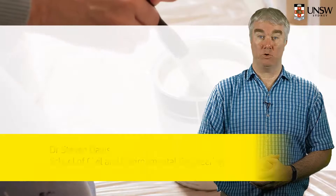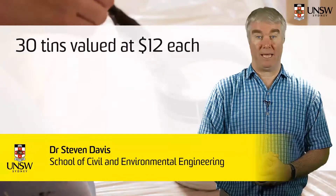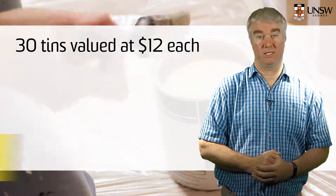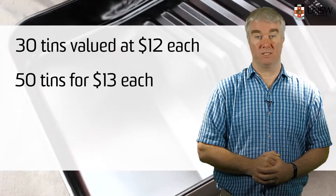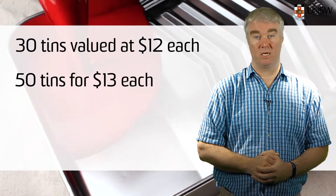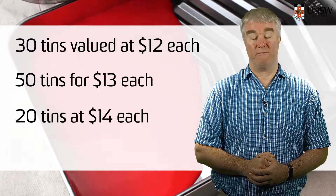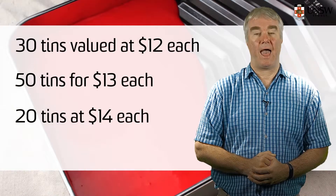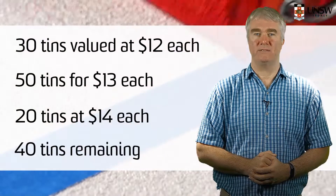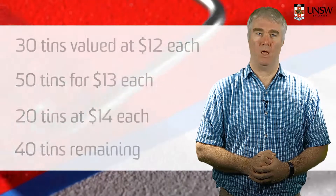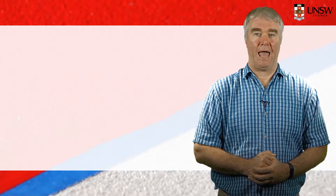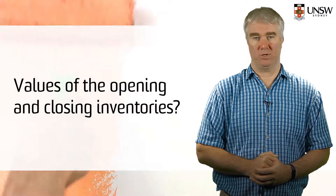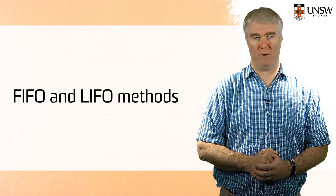A painter starts a fiscal period with 30 tins of paint valued at $12 each. During the period he purchases another 50 tins for $13 each and then later purchases 20 tins at $14 each. At the end of the period he has 40 tins remaining. What is the cost of goods sold for the period and the values of the opening and closing inventories? Use both the FIFO and LIFO methods.